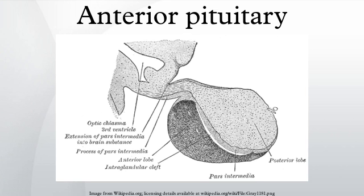Role in the endocrine system — Hypothalamic control: Hormone secretion from the anterior pituitary gland is regulated by releasing hormones secreted by the hypothalamus. Neuroendocrine cells in the hypothalamus project axons to the median eminence, at the base of the brain. At this site, these cells can release substances into small blood vessels that travel directly to the anterior pituitary gland.